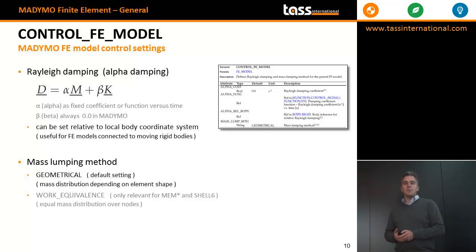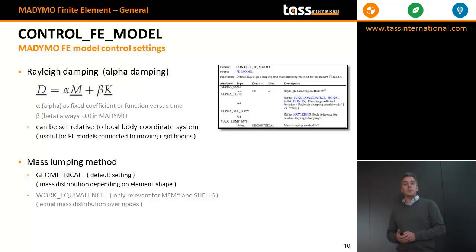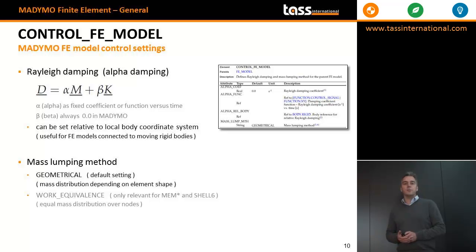Some elements in MARIMO that can control your FE model settings: first, we have the control FE model element. Inside this element, you can define Rayleigh damping. Normally Rayleigh damping has a parameter linked to the mass and one linked to the stiffness, but in MARIMO we only have the mass-linked parameter alpha. That is why it is also often called alpha damping.